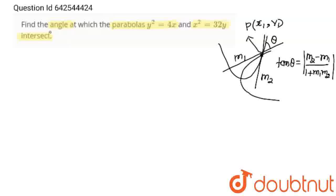One curve is y²=4x and other curve is x²=32y. From here, we'll get y=x²/32. And I'm going to put this in this equation. What we'll get? (x²/32)² is equal to 4x.